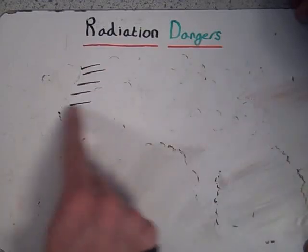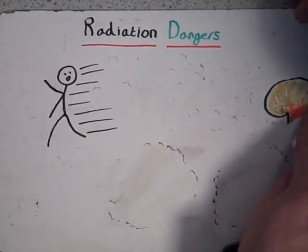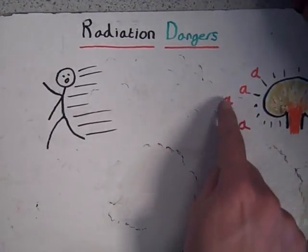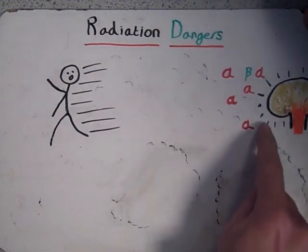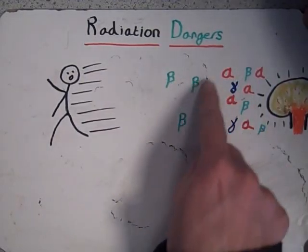Ionising radiation is dangerous because it damages living cells. It affects them because it can destroy cell membranes, causing them to die. It can also damage vital molecules such as DNA, which affect cell division and can cause uncontrollable growth. This growth may lead to a cancerous tumour.